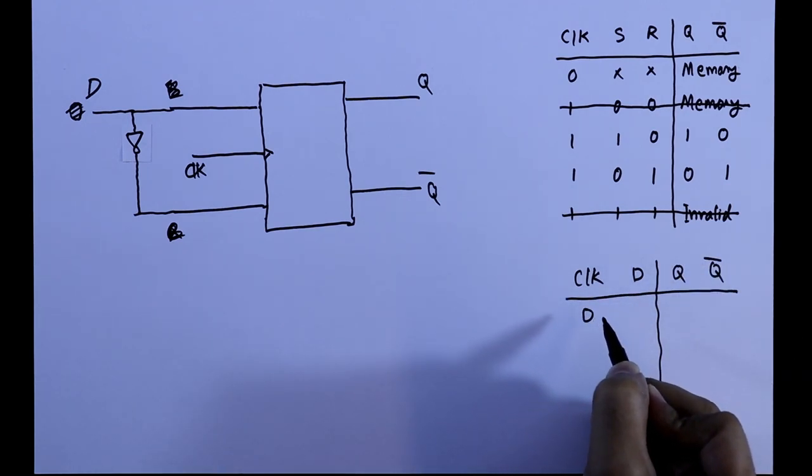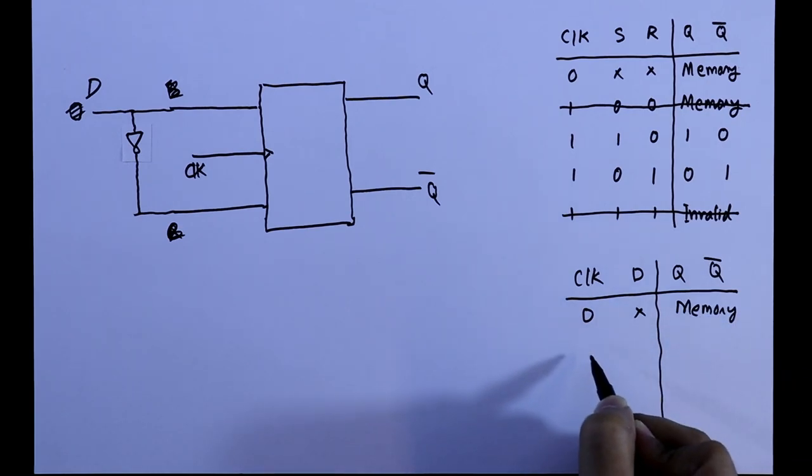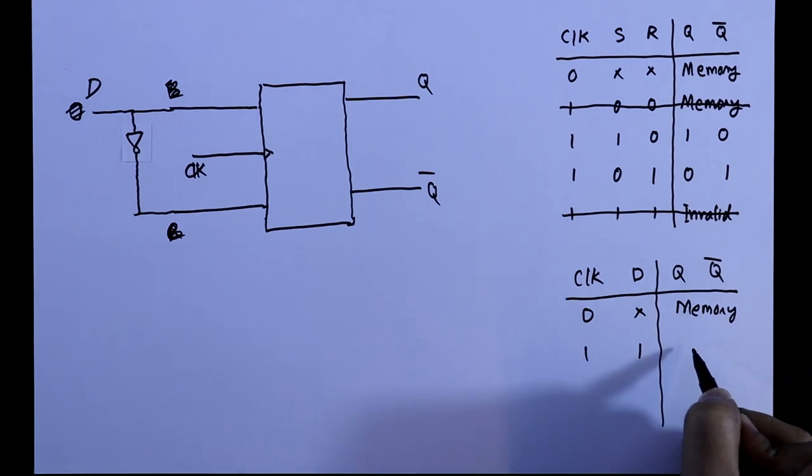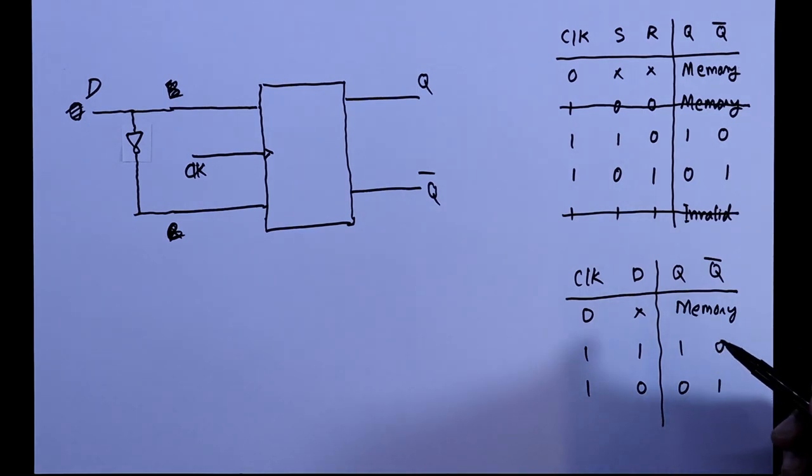If clock is 0 then we will get the memory state. When clock is 1 and D is 1, then we will get Q 1, Q bar 0. And when D is 0 then we will get Q 0, Q bar 1. So in this way we can convert SR flip-flop to D flip-flop.